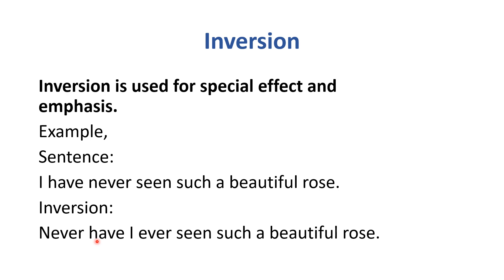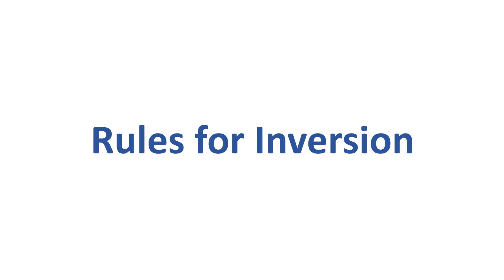In inverted sentence structure, it means the verb comes before the subject. For example, 'have' is the verb and 'I' is the subject — so 'have' comes before 'I.' Now we will discuss some basic rules of inversion and then continue further.